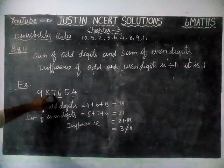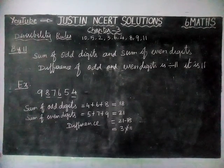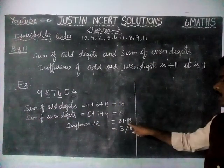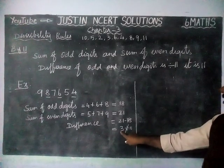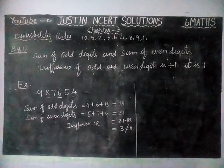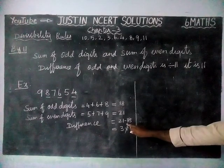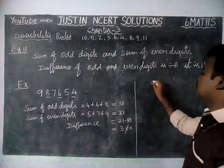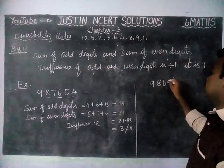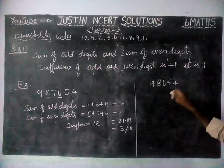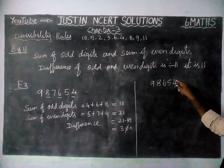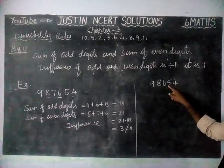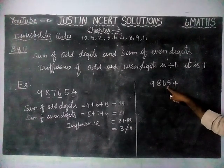So now we are going to make a small adjustment in this to get a number divisible by 11. We have 21 and 18, giving only a difference of 3. We will add another 7. We will take the number 7, 9, 8, 6, 5, 4. Check it now: 6 plus 4 is 10, 10 plus 9 is 19. And 8 plus 5 is 13. Only 6 is the difference.